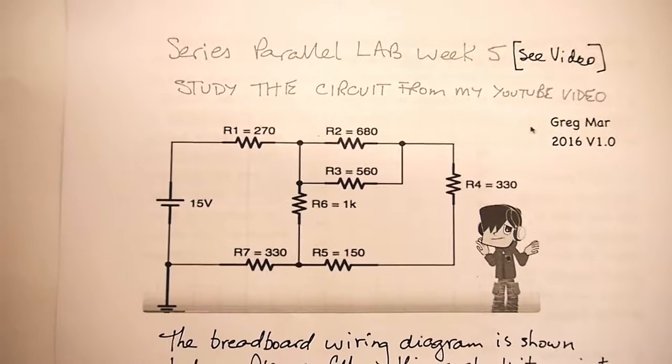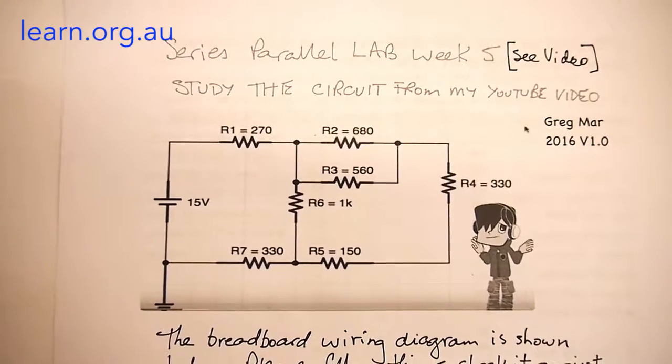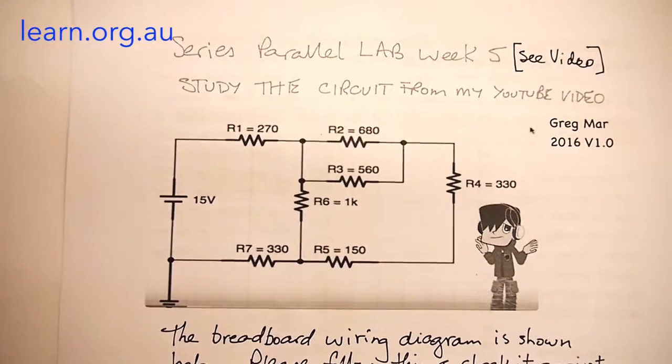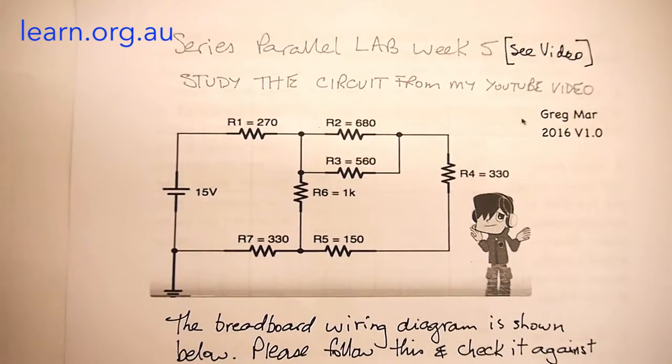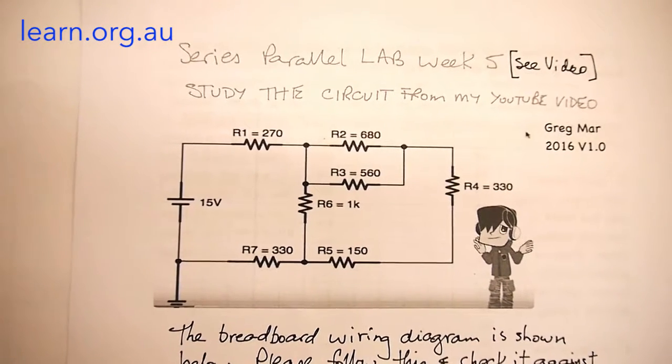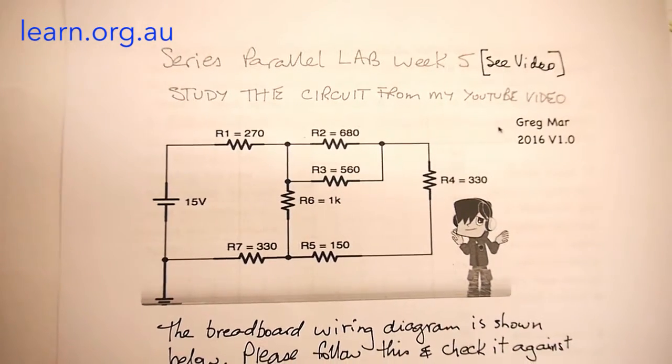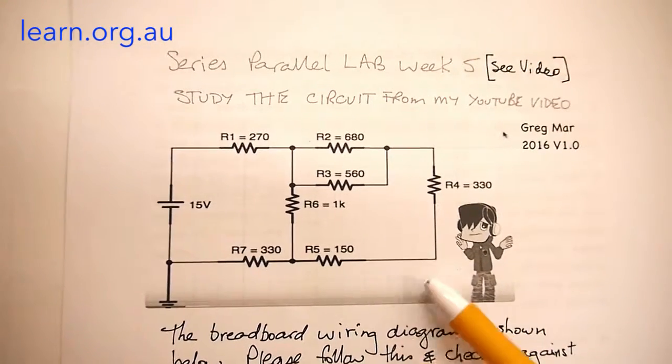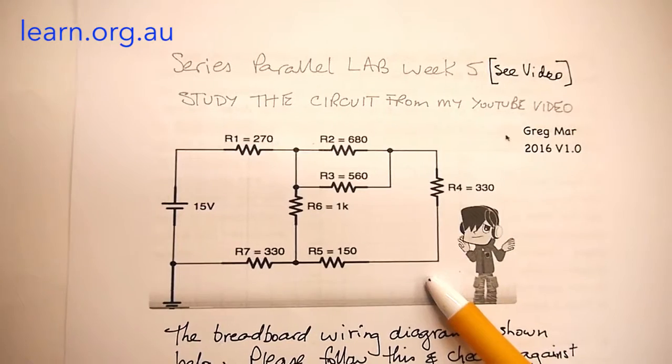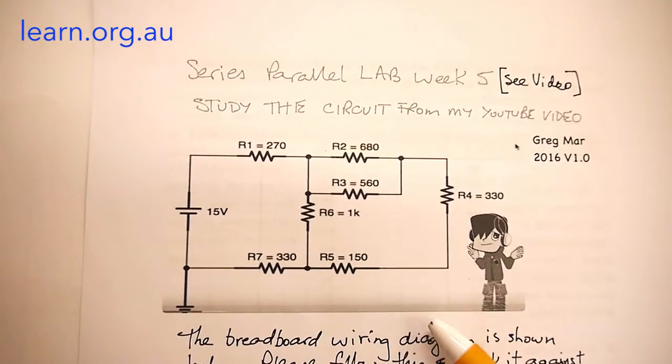This is the circuit for the series parallel lab that was in week five and week six. There was a video already made about this, but the video did not go on to show how the calculations were made. We had our main schematic diagram here which has three, six, seven odd resistors powered by 15 volts.